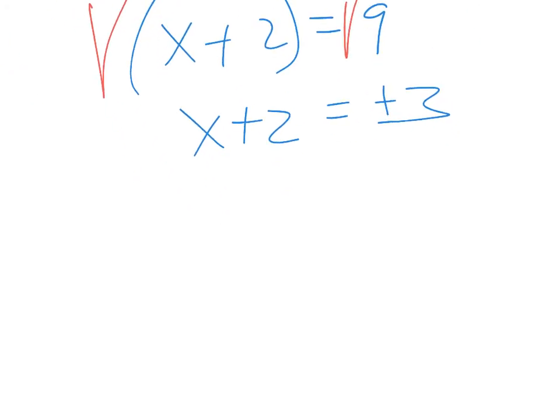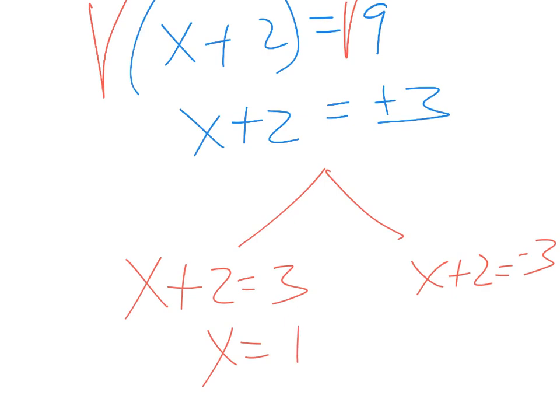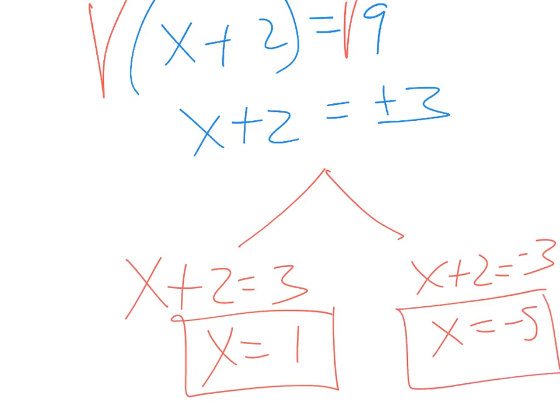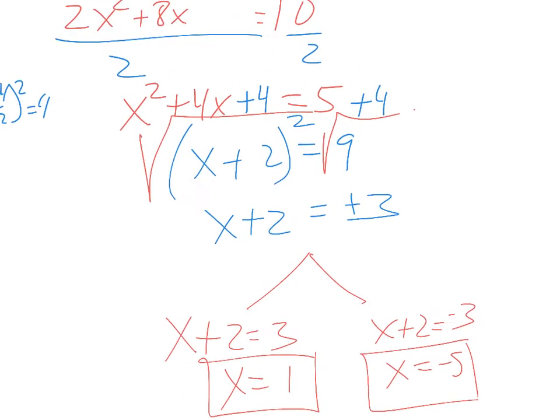In this case, since it did simplify, we want to write two equations. x plus 2 equals positive 3, x plus 2 equals negative 3. Subtract 2 from both sides, x equals 1. Subtract 2 from both sides, x equals negative 5. There you have it.